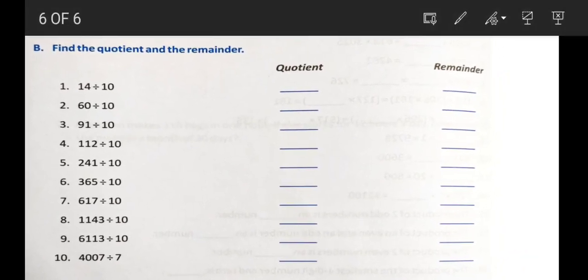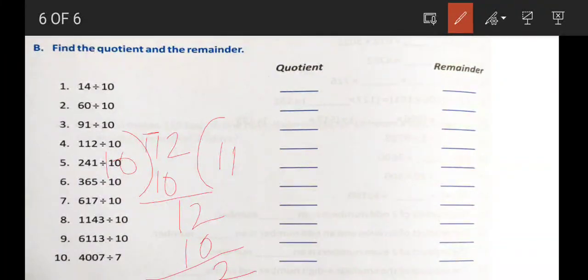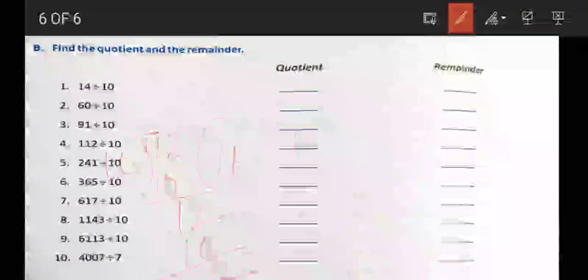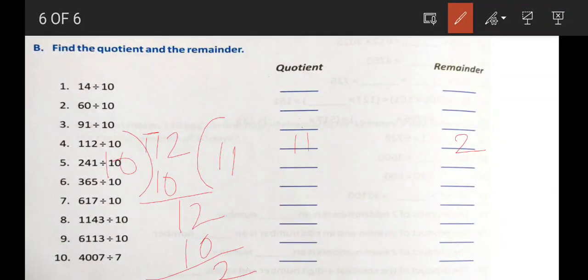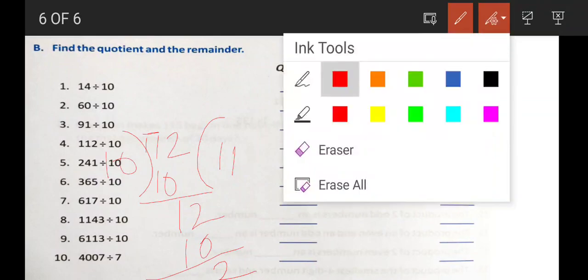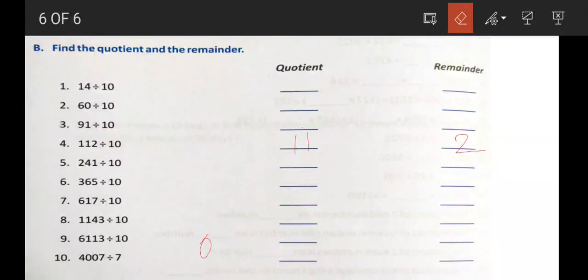Here we have to divide by 10. Let's divide 112 by 10. 10 ones are 10. The quotient is 11 and the remainder is 2.